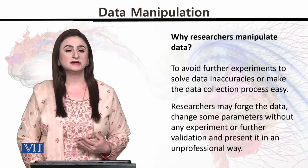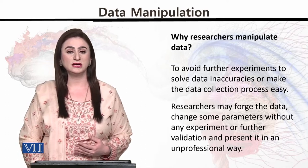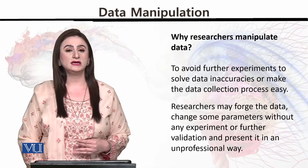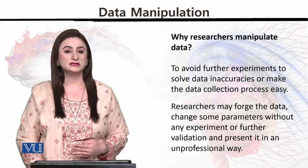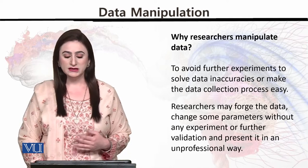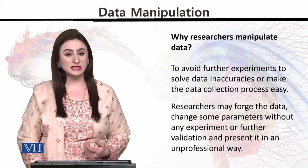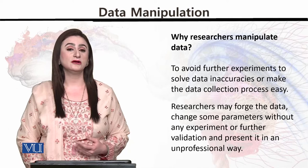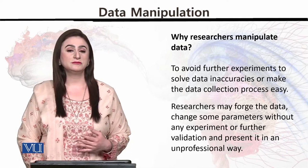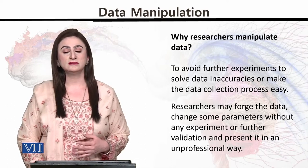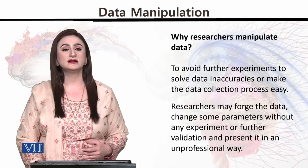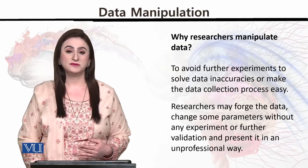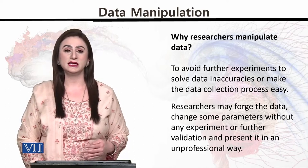When certain kinds of trends are coming in research that indicate the final conclusions will not narrate the aims and objectives in the way the researcher had initially planned and prepared, professionals also manipulate data as an unethical practice. Researchers may force data changes and alter some parameters without any experiment, further validation, or professional presentation. This is neither a Type 1 nor a Type 2 error — but errors are still being created by the researcher himself, and we need to understand that this is strictly an unprofessional and unethical activity.